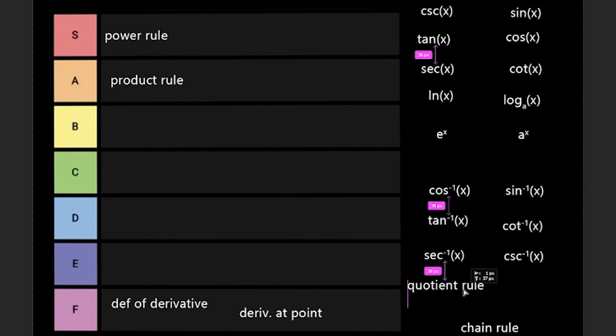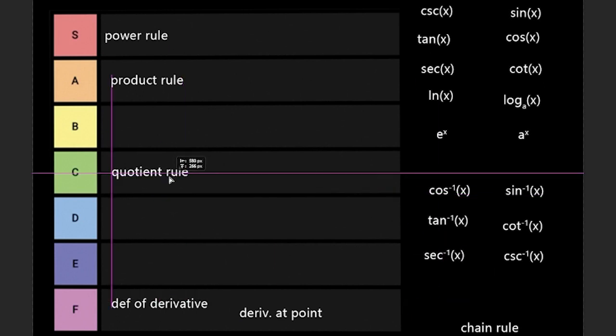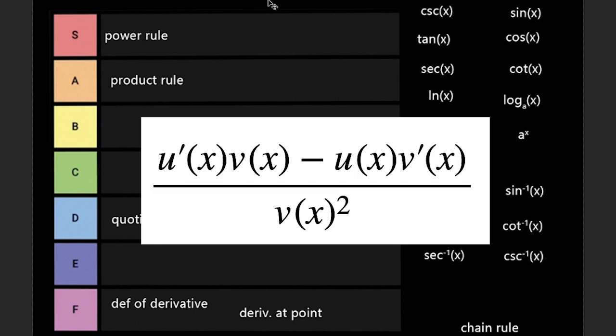Next one we have is quotient rule. Quotient rule, I give this one a D. I don't like quotient rule. It's extremely annoying and looks messy.